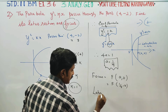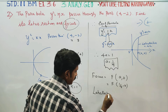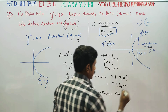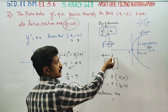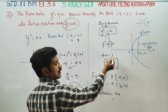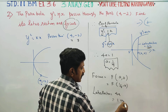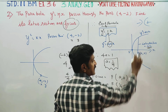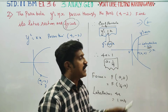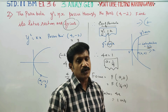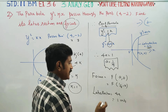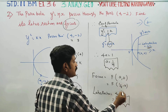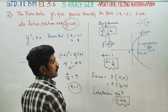The latus rectum is called the focal chord — it is the line through the focus. The latus rectum formula is 4a. Therefore the latus rectum = 4 × (1/4) = 1 unit.